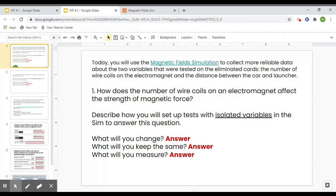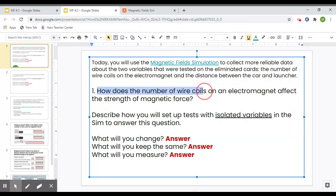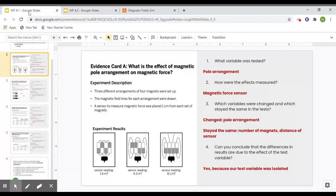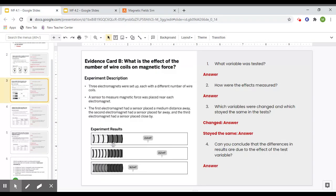So starting off, question one is saying how does the number of wire coils on an electromagnet affect the strength of the magnetic force? So I want you to think about and describe how you will set up tests with isolated variables in the simulation to answer this question. So remember, like I said for this one, this is not valid because we are changing the distance, but we are trying to isolate the number of wire coils.